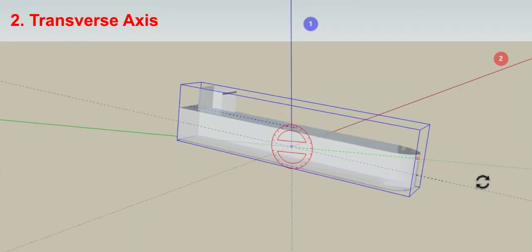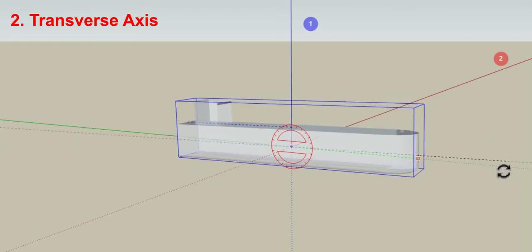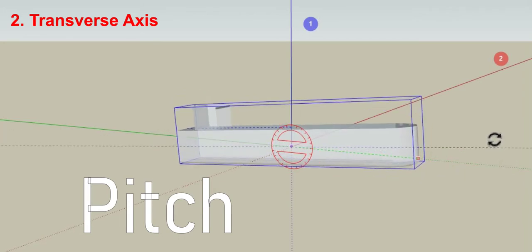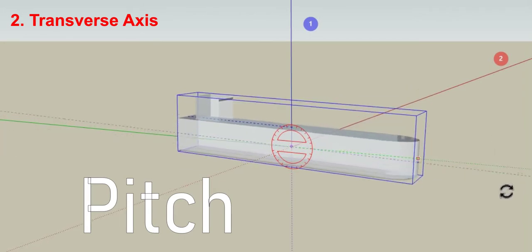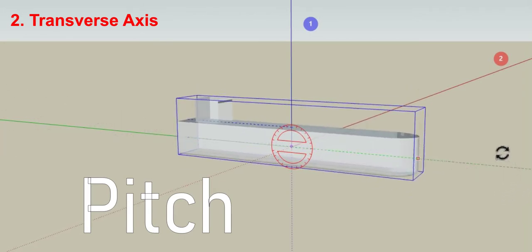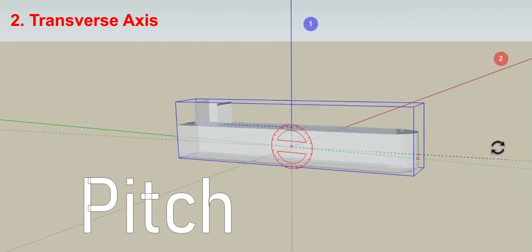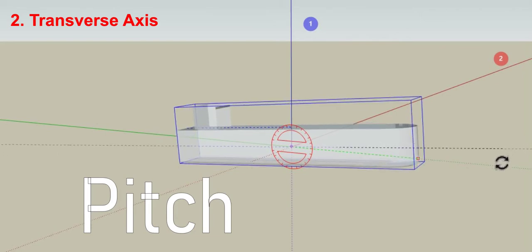The angular counterpart to that is pitch. This is the same axis of motion, transverse axis, but now we're seeing a rotational movement pattern. This is a rocking back and forth as the ship would ride over a swell or set of waves.